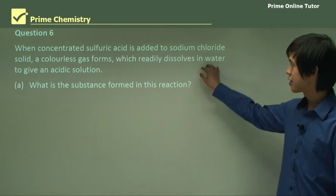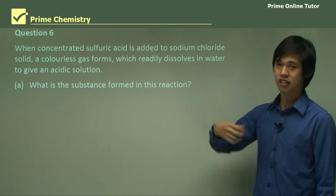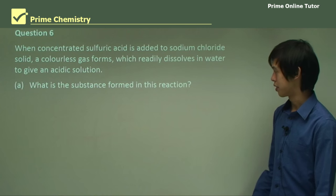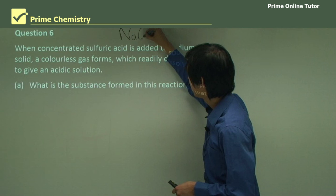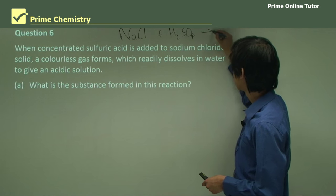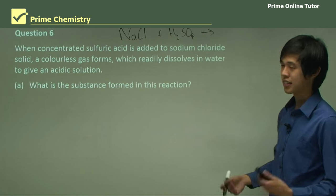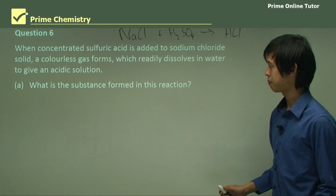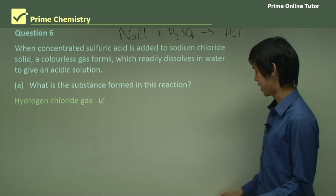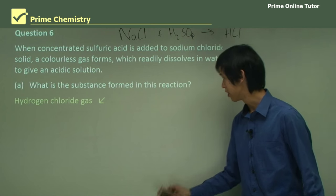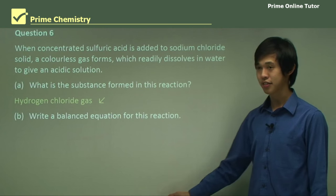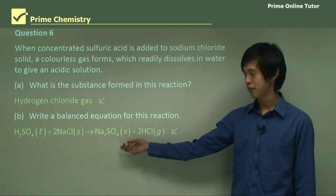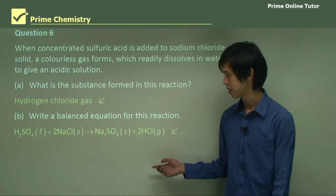Question six: when sulfuric acid is added to sodium chloride solid, a colourless gas forms which readily dissolves in water to give an acidic solution. What is the substance formed? Starting with NaCl and H₂SO₄, and knowing it forms an acidic gas, it's most likely HCl — hydrogen chloride gas. The balanced equation is: H₂SO₄ + 2NaCl → Na₂SO₄ + 2HCl.